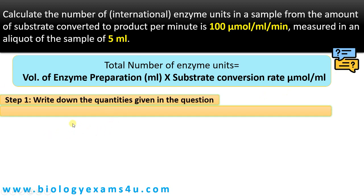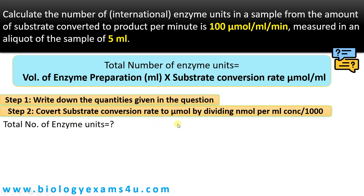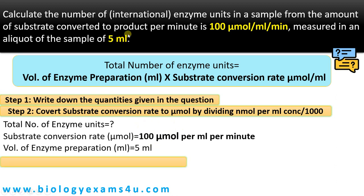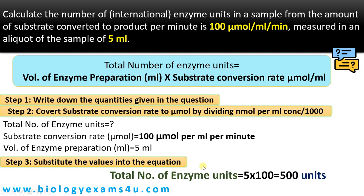First, write down the quantities given. The substrate conversion rate here is given in micromole, so there is no need to convert it — we can directly use 100 micromole per ml per minute. The volume of enzyme preparation is 5 ml. Substituting the values: total number of enzyme units = 5 ml × 100 micromole per ml = 500 units.